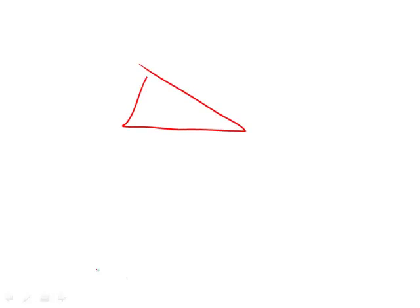This problem has a triangle, and an important thing to know about a triangle is that the measures of the angles — in this case we have x, we have y, and we have z — these will always equal 180, no matter how the triangle is shaped. Always 180. So we know x plus y plus z is 180.